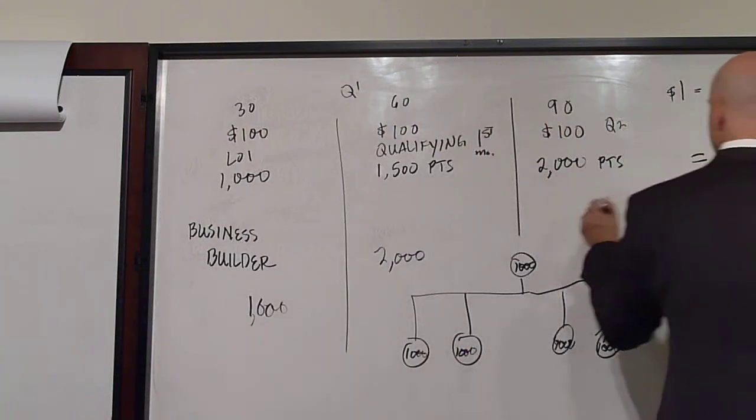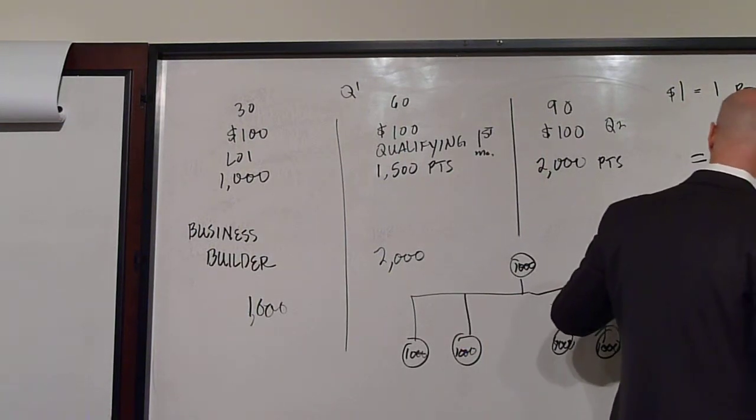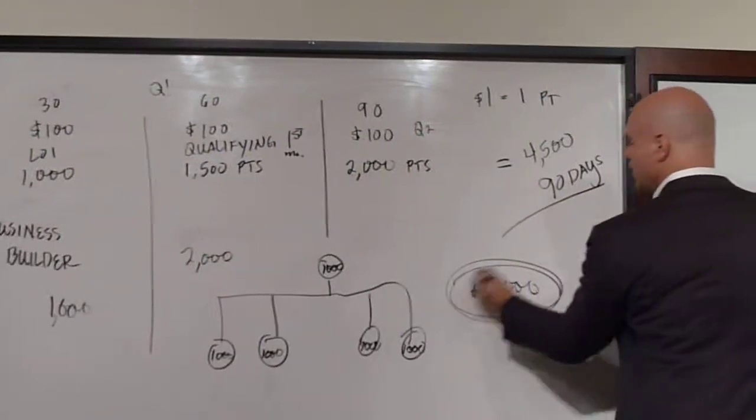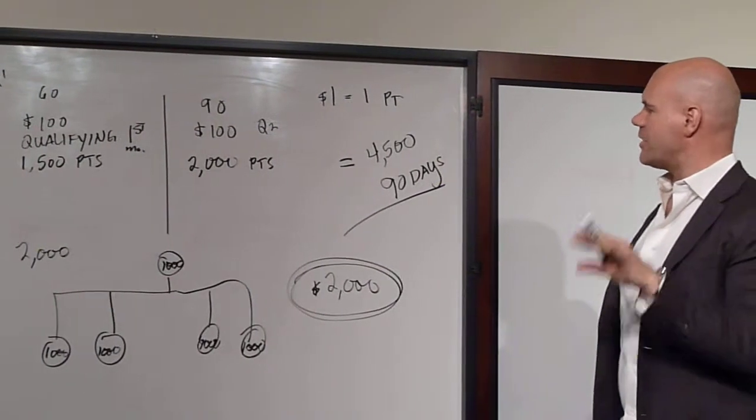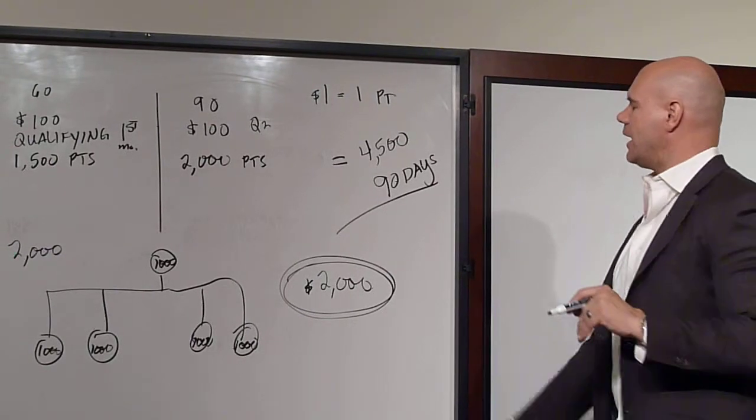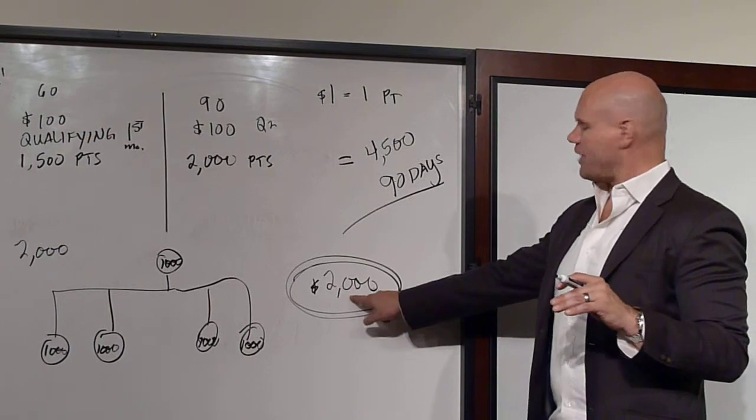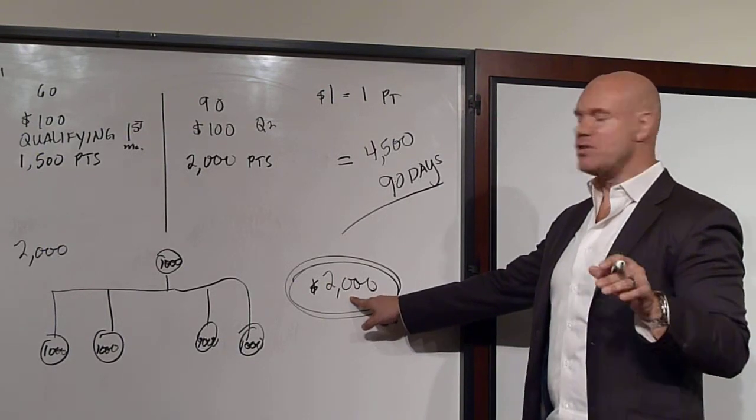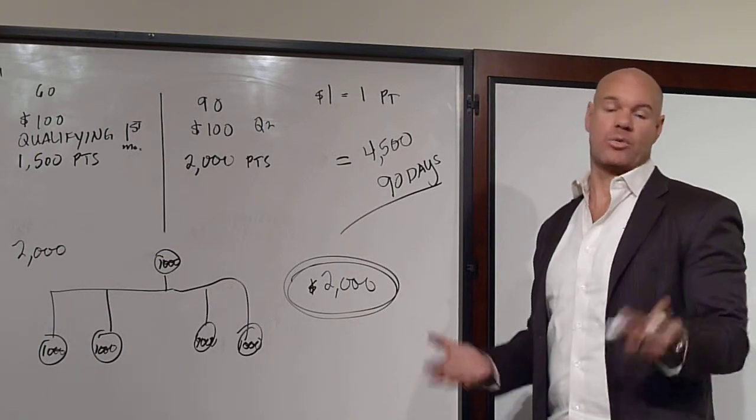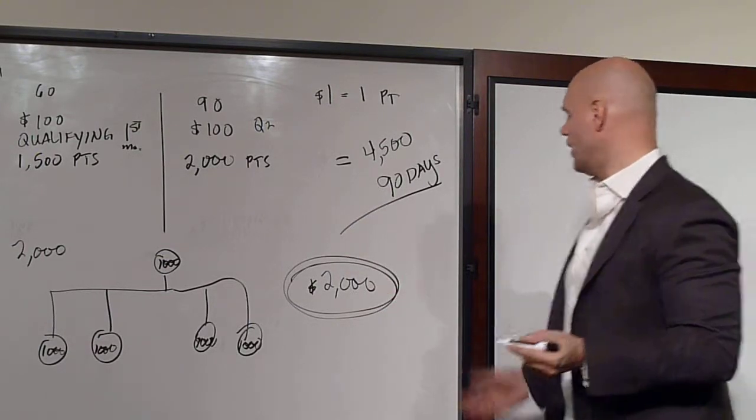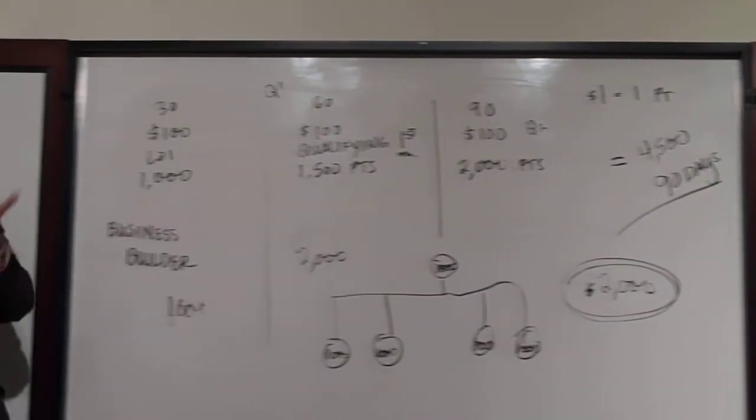It is important once you are an executive that you maintain two thousand dollars a month in volume. That's a critical number. Once you're an executive, you maintain two thousand dollars a month. You can do that through sponsoring people, acquiring customers, or a combination, which is actually the smarter thing to do. So become an executive in 90 days.